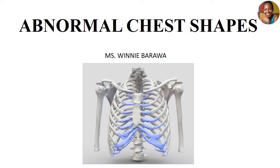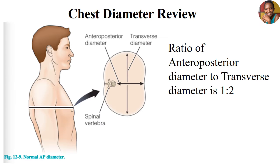We'll look at the different shapes that can develop when a person becomes sick, specifically in the respiratory system. To identify abnormalities of chest shapes, you first need to appreciate two diameters. The first is the anterior-posterior diameter of the chest, which goes from the spinal vertebra all the way to the sternum. The second is the transverse diameter — the horizontal diameter connecting rib to rib, forming our thoracic cavity.